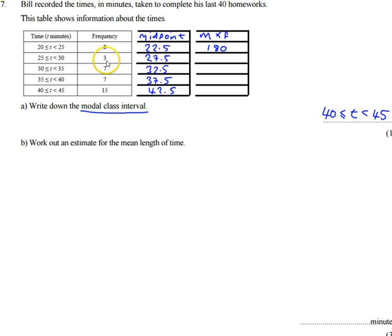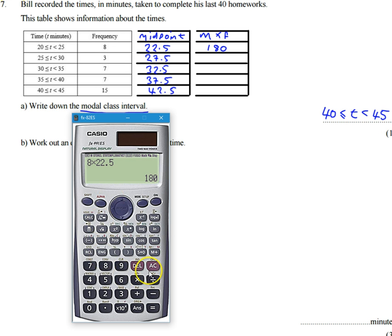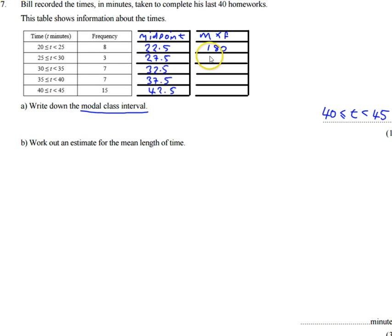So three homeworks, I'm estimating took 27 and a half minutes each. So I'm going to do three times 27.5. And that's going to give me 82.5. So over here, I can fill that in as 82.5.